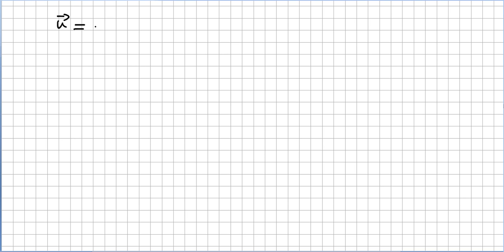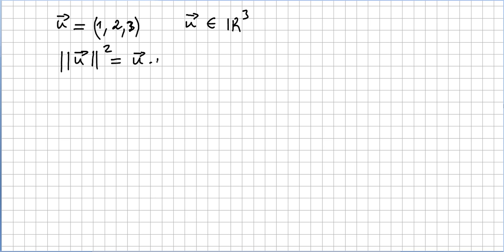Now that we have a notion of what a norm is, let us say we have a vector — u will be a vector in R3. So the question is: what is the norm of u? I prefer not to use the square root here for now. So the length of u squared is going to be 1, 2, 3 dot 1, 2, 3.